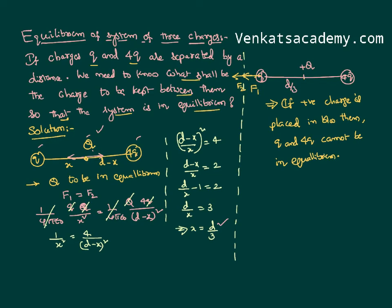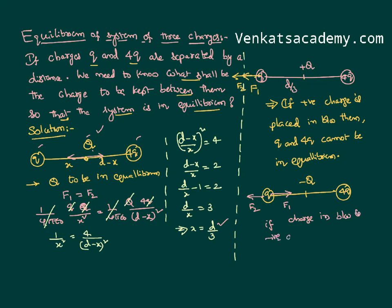Let us test what happens if we keep a negative charge between q and 4q. On small q, due to this negative charge, there will be a force of attraction; and due to 4q, there is a repulsion. F1 and F2 are acting in opposite directions, so if the charge kept in between is negative, F1 equals F2 and q can be in equilibrium. Similarly, 4q can also be in equilibrium. Therefore, the entire system can be in equilibrium.